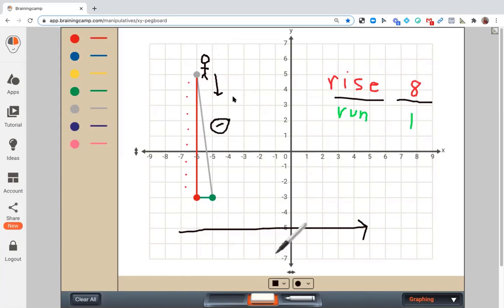However, don't forget the negative because this line is moving down from left to right, it's going to be a negative slope. So our final slope would just be negative eight. And that's the slope of our line.